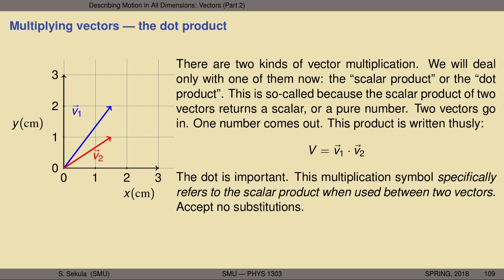The notation for the dot product, which involves a dot as the name implies, is shown here. If we take vector V1, shown in blue, and we dot it with V2, shown in red, the dot product will by construction return a single number. The dot here is extremely important — there's another kind of multiplication that involves a crossing X symbol, and it is a very different kind of multiplication. Notation is crucial: for vectors, dot means scalar product, and the crossing X or times symbol means something else. Accept no substitutions when talking about the scalar product of two vectors.